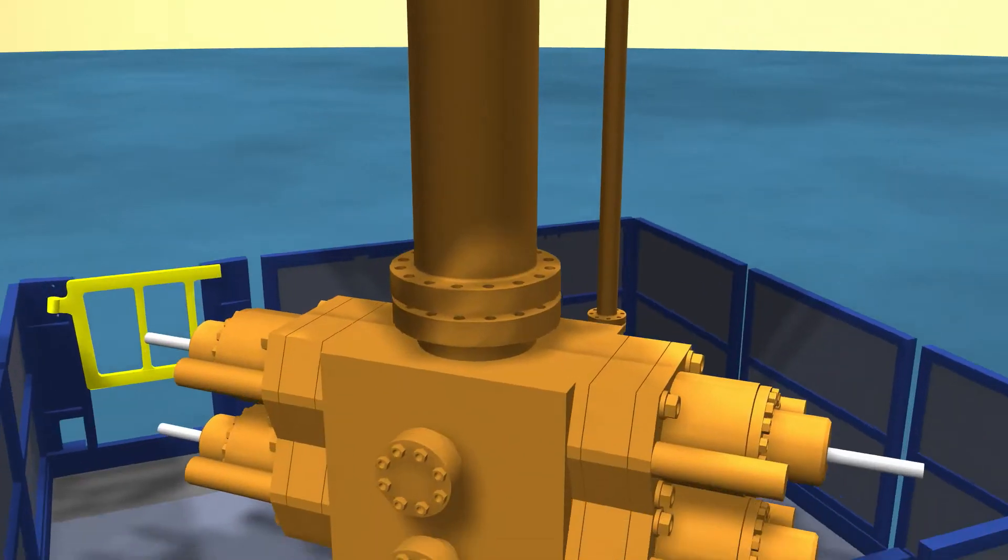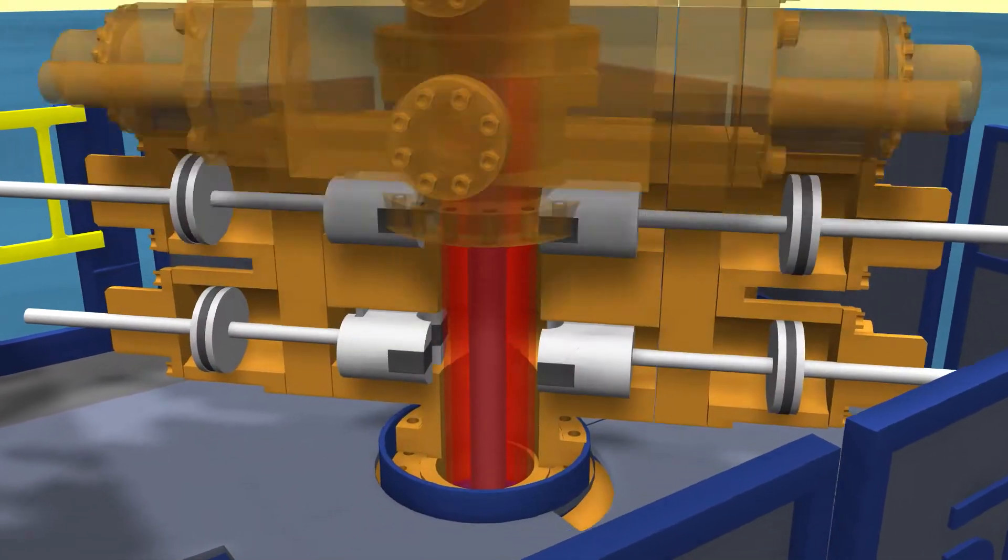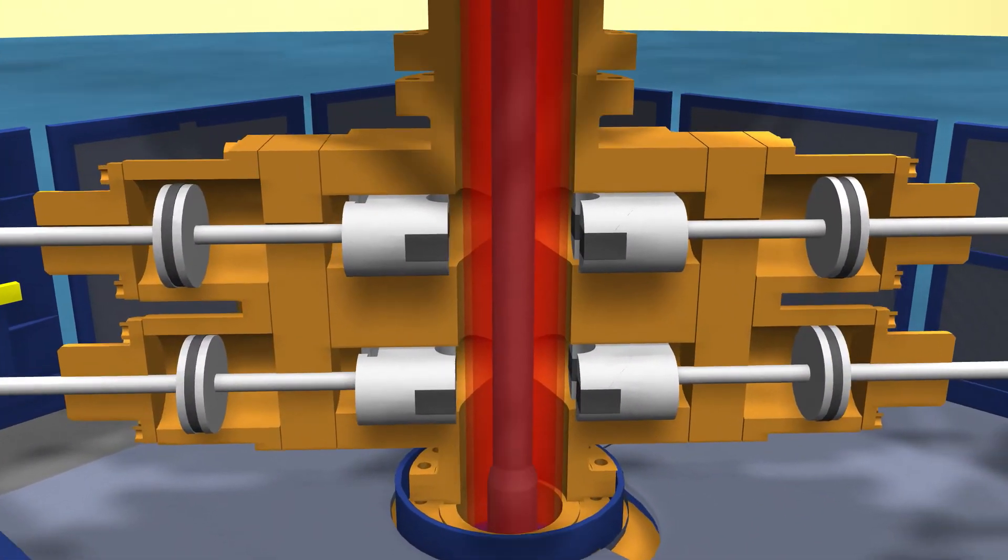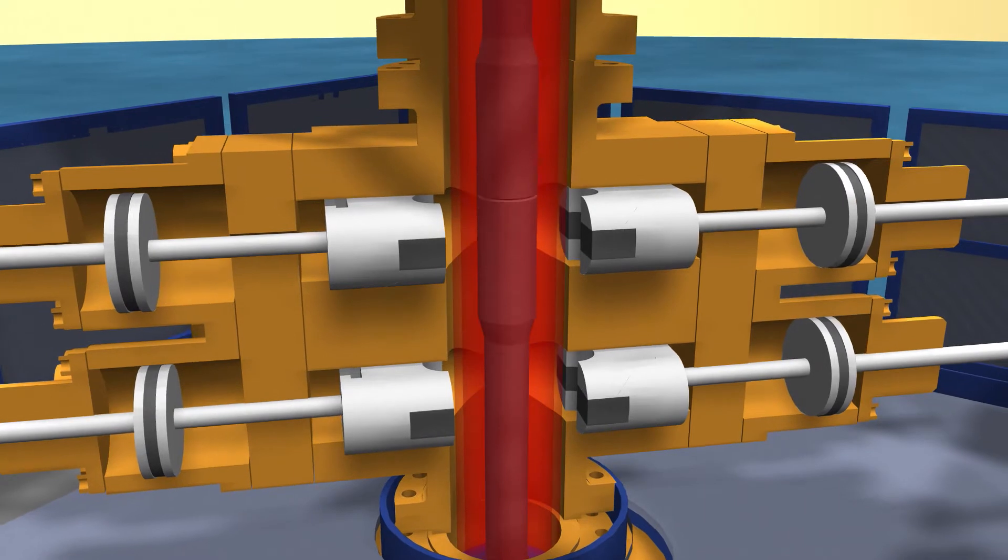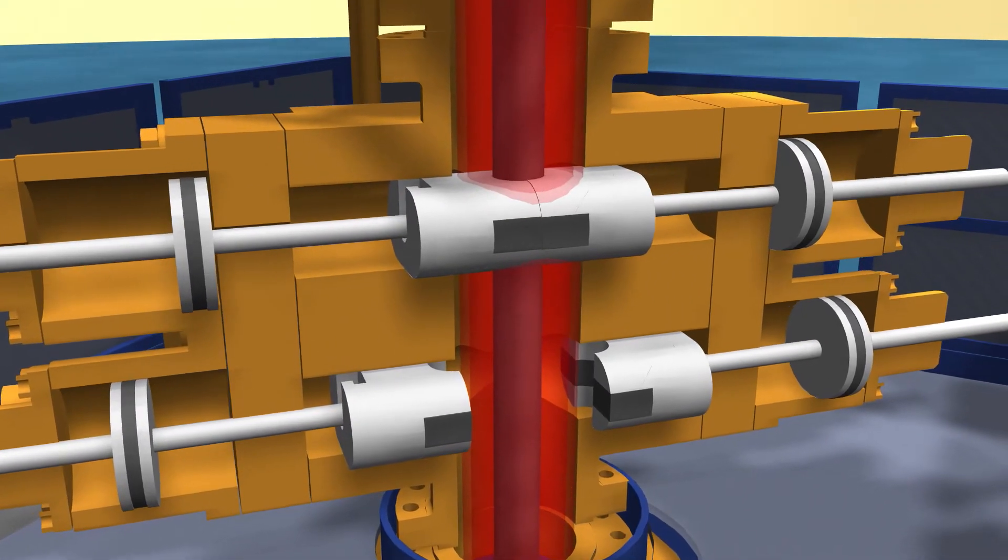The well pressure is controlled by using two stripper BOPs. After a tool joint passes, the BOP closes, containing the pressure below.